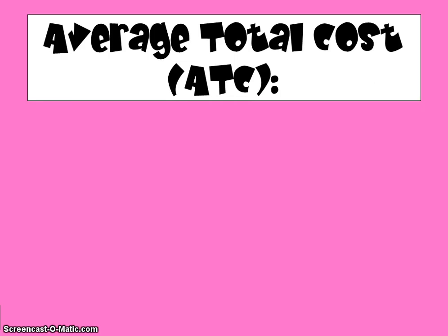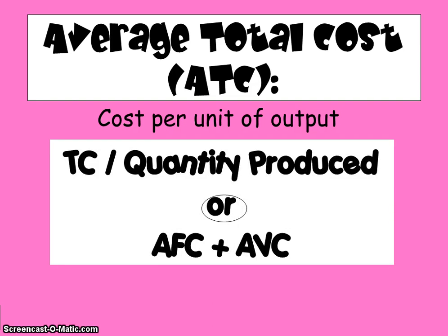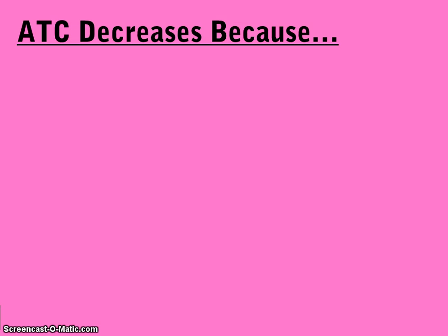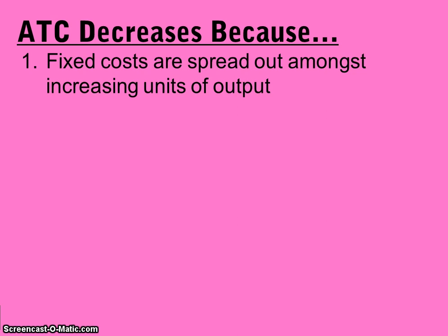Average total cost is cost per unit of output — just an average. It's your total cost of production divided by the quantity produced. Another way to calculate it is by adding average fixed and average variable costs together. The average total cost curve is U-shaped, and there are four reasons for that. Average total cost decreases in the beginning because fixed costs are being spread out amongst increasing units of output, and increasing marginal returns are being enjoyed — your inputs to production become more and more productive, adding more and more to total output, driving average total cost down.